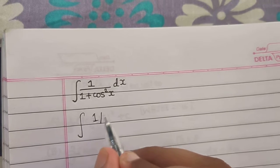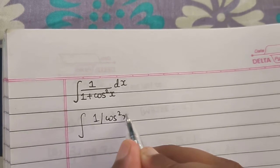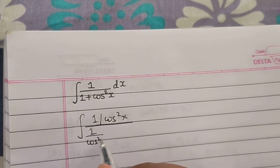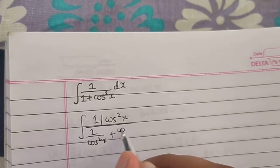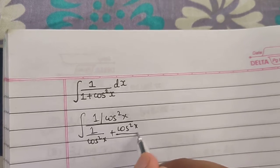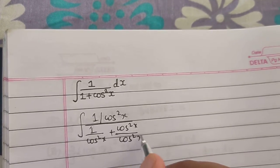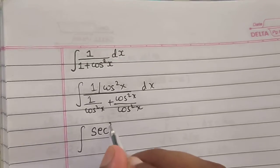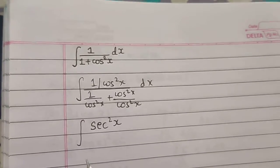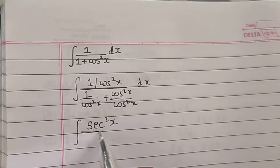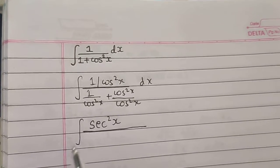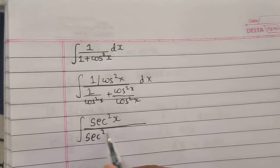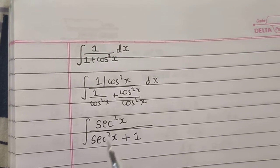If I divide by cos²x, the numerator will become 1/cos²x, and in the denominator it will be 1/cos²x + cos²x/cos²x dx. Now my numerator will become sec²x, which gives me a hint that there will be a tan substitution. Let's see, this is sec²x plus 1.